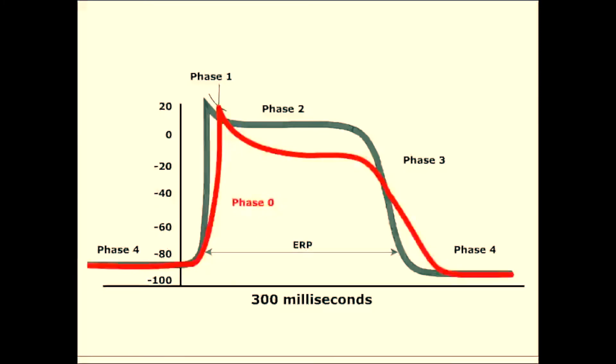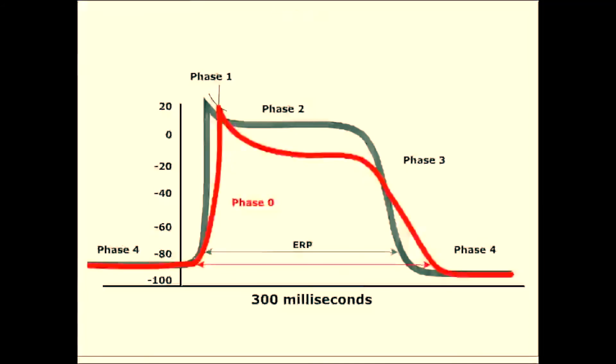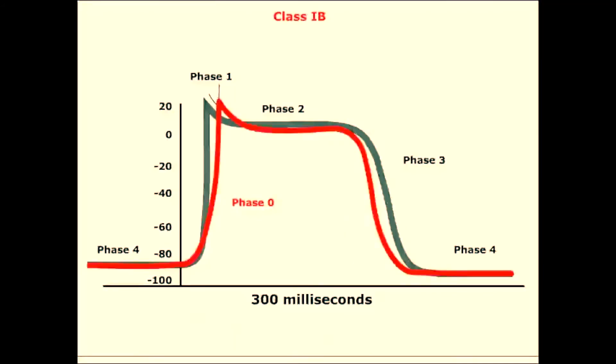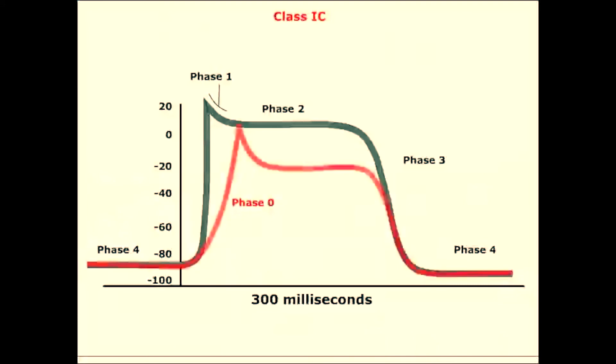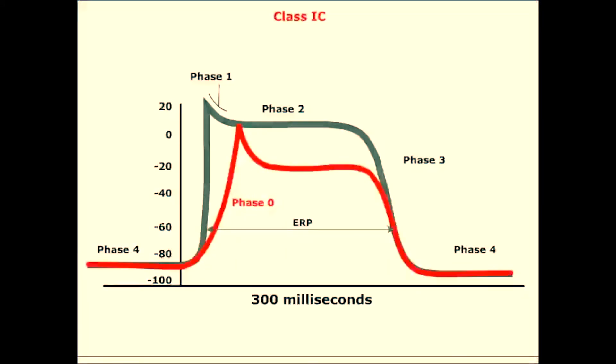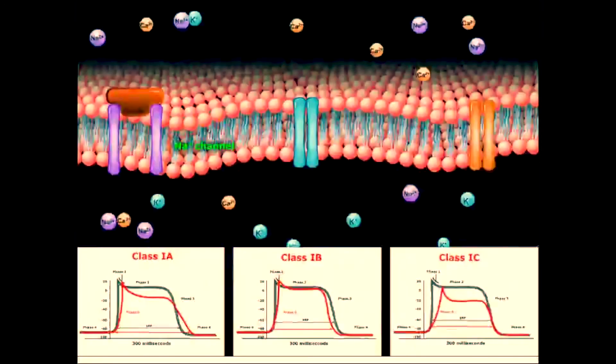Class 1 drugs can be divided into three subgroups, each with a different effect on the effective refractory period. Class 1a drugs, such as quinidine and procainamide, increase the effective refractory period. Class 1b drugs, such as lidocaine, decrease the effective refractory period. Class 1c drugs, such as flecainide, have no effect on the effective refractory period. Let's now proceed to the next class of antiarrhythmic drugs.